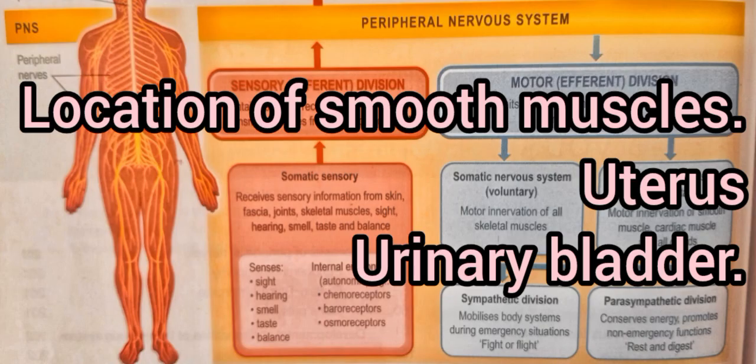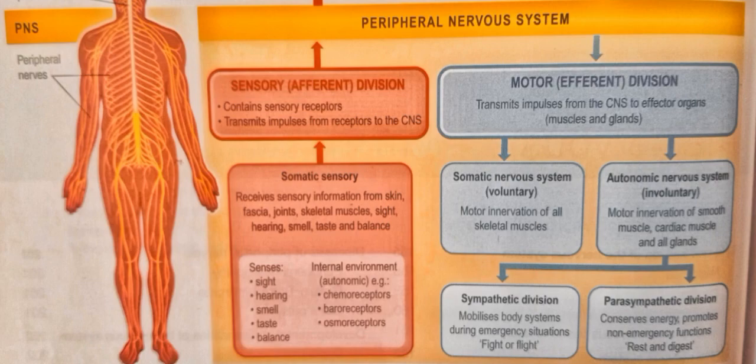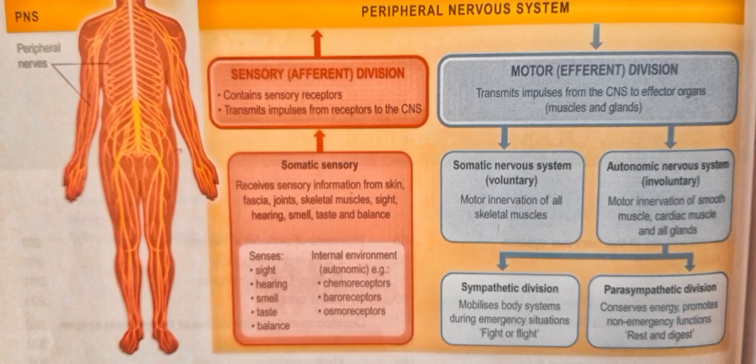The Autonomic Nervous System has two divisions: the Sympathetic Division and the Parasympathetic Division. The Sympathetic Division mobilizes body systems during emergency situations — like fight or flight responses. The Parasympathetic Division conserves energy and promotes non-emergency functions. Parasympathetic is rest and digest — it allows activities to take place in a progressive, calm manner.